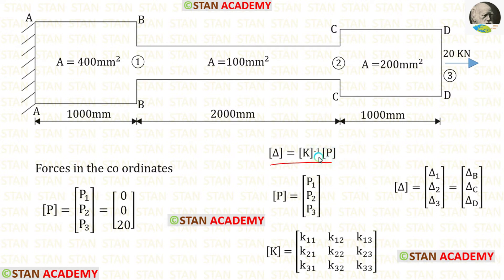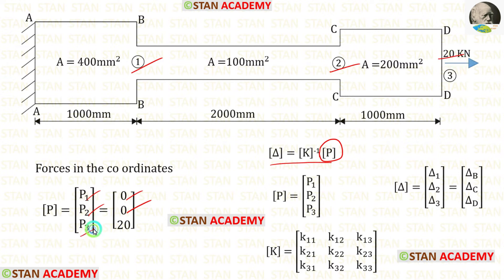Now let us find the P matrix. In the first coordinate and the second coordinate there is no load, so P1 and P2 will be zero. In the third coordinate we have a load of 20 kN, so P3 equals 20. Since it is acting towards the right side, we apply the load as positive.